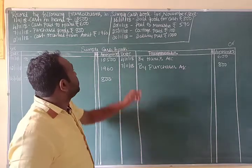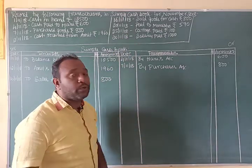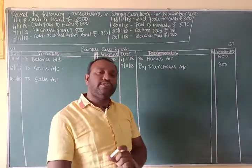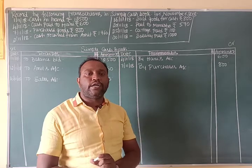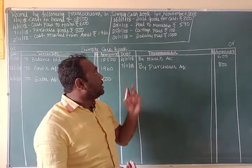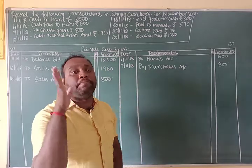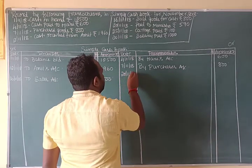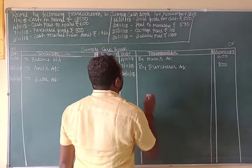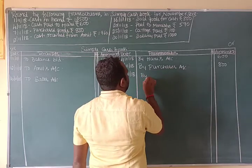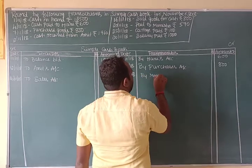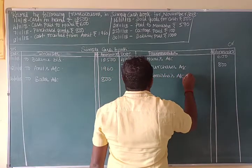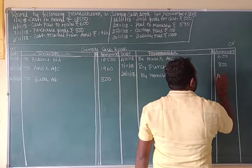20th November 2018: paid to Monisha. The general entry is: Monisha's Account debit, To Cash Account. Since it is a payment, it should be taken on the credit side. Entry: 20th November 2018, By Monisha's Account — Rs. 290.